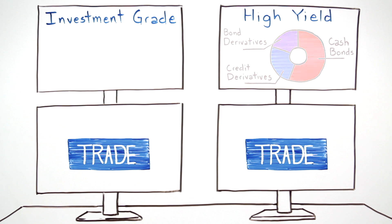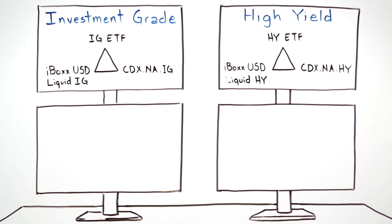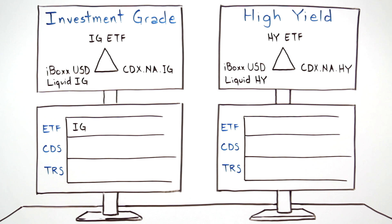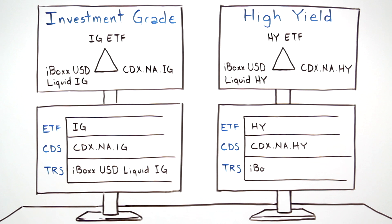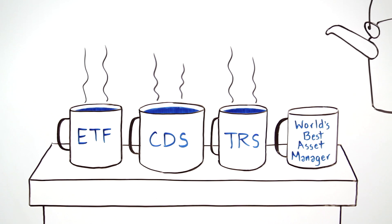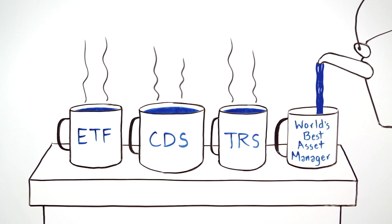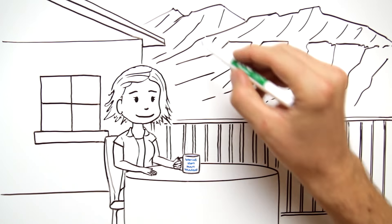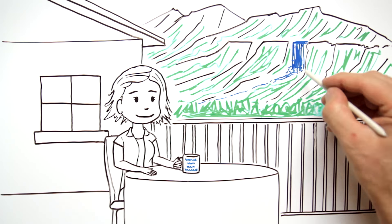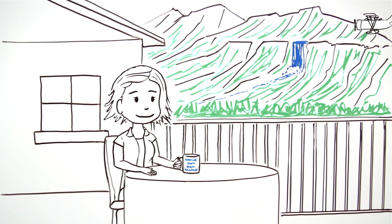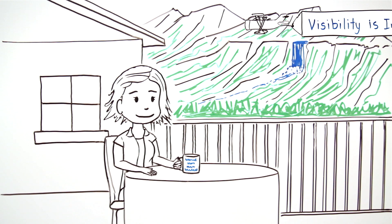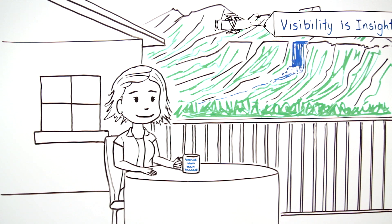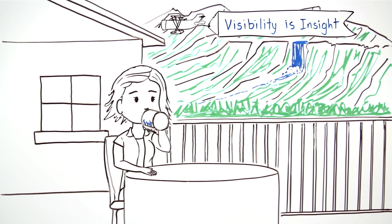Transparent, rules-based market indices combine to form tradable, index-linked fixed income liquidity triangles. This allows investors to gain market exposure tailored to their needs at a lower cost. With the visibility and insight financial tools linked to iBOX indices bring, investors can finally enjoy access to a liquid, low-cost, fixed income ecosystem.